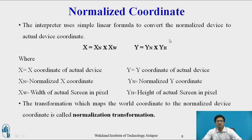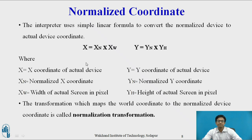Normalized device coordinates use an interpreter which consists of a simple linear formula to convert normalized device coordinates to actual device coordinates, where x equals x_n times x_w, and y equals y_n times y_h. Here x and y are coordinates of the actual device, x_n and y_n are normalized x and y coordinates, x_w is the width of the actual screen in pixels, and y_h is the height of the actual screen in pixels.